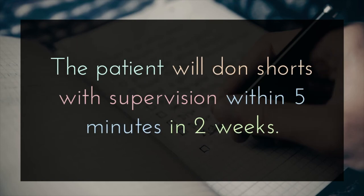Let's look at a sample goal to see the format in action: 'Patient will don shorts with supervision within five minutes in two weeks.' Here you'll see that patient is the client, will don shorts is the occupation, with supervision is the assistance level, within five minutes is the specific condition meaning it needs to happen within that time frame, and two weeks refers to the timeline in which we're anticipating that this goal will be met.